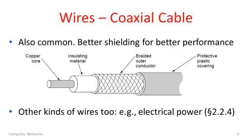Another kind of wire is shown in the picture in the middle — it's a coaxial cable. It's also fairly common. It used to be used to carry video signals, and still is for a cable to your home. These kinds of wires generally have better performance than twisted pairs, meaning they're able to carry faster amounts of data, higher data rates, over longer distances, because of their physical properties.